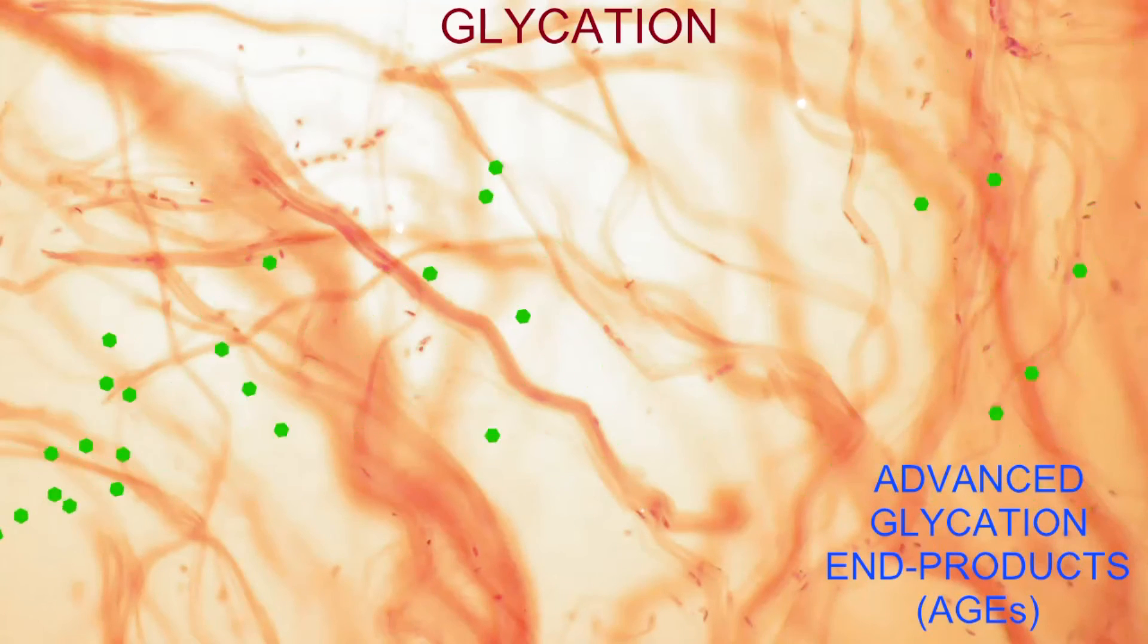For example, glycation of the structural protein collagen can affect its function, and in the heart, be a factor promoting heart failure.